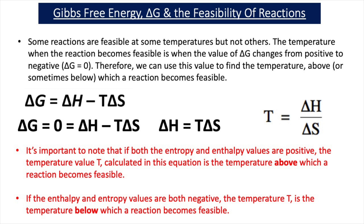It's important to note that if the entropy and enthalpy values are both positive, the temperature T you calculate is the temperature above which the reaction becomes feasible. For example, if you had a value of T equal to 495 Kelvin and both delta H and delta S are positive, that means the reaction would become feasible above 495 Kelvin. If the enthalpy and entropy values are both negative, the temperature T is the temperature below which the reaction becomes feasible — so below 495 Kelvin the reaction is feasible.